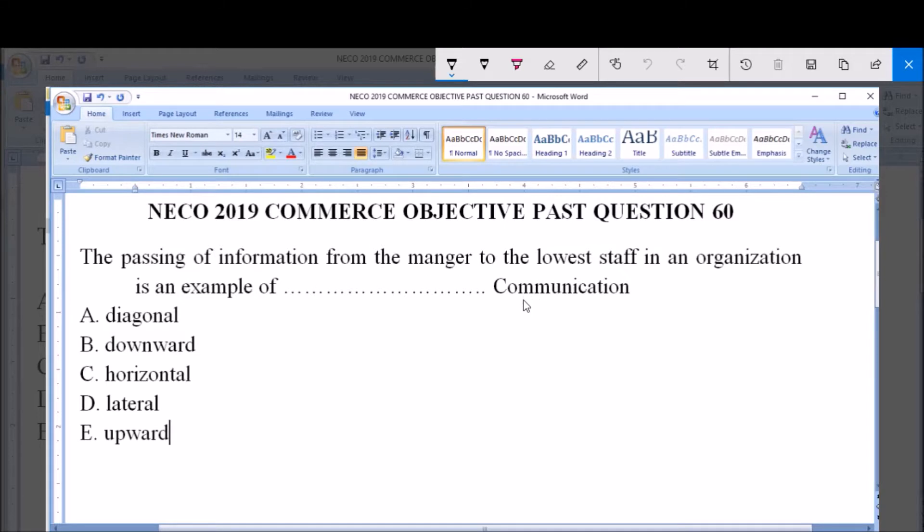So we are looking at communication in an organization and we are given a description which is passing of information from the manager to the lowest staff. What example of communication can it be classified under?